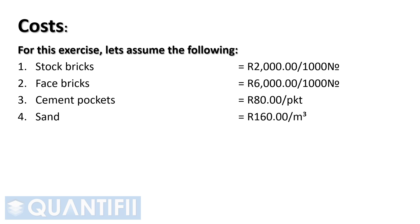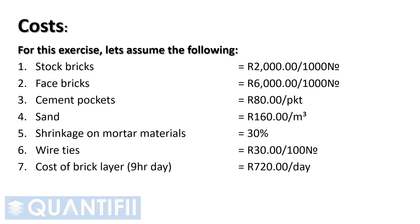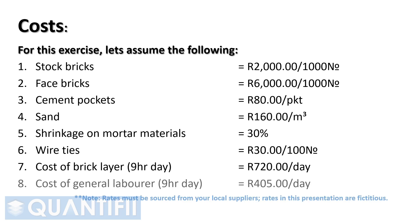Shrinkage on mortar materials at 30%. Wire ties at 30 Rand per bundle of 100. Cost of a brick layer for a 9-hour workday at 720 Rand per day, which includes 1 hour's paid lunch. Cost of a general laborer for a 9-hour workday at 405 Rand per day, which includes 1 hour's paid lunch.